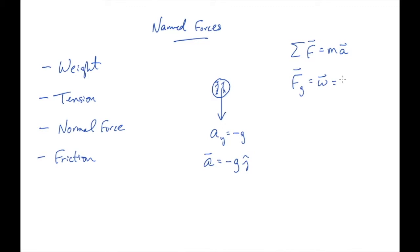We can set F_g equal to ma, and since I know the acceleration vector is minus g downward, that gives us the weight vector: it equals the object's mass times the acceleration due to gravity — that's its magnitude — and its direction is straight down.